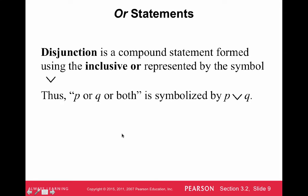We call or statements a disjunction, and we use the symbol V. It's a compound statement for the inclusive or used by the symbol V. So P or Q or both is symbolized by P ∨ Q. Every time I see this in the future, I'm just going to say or.